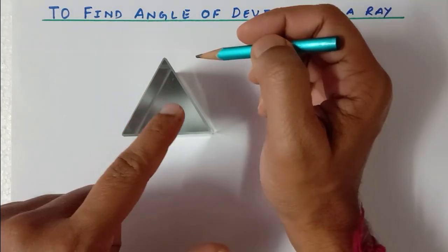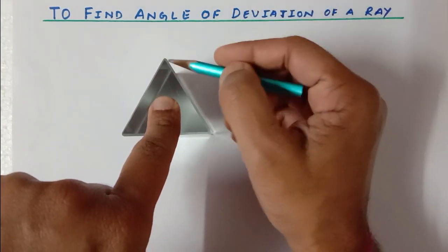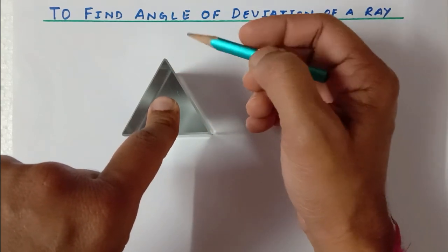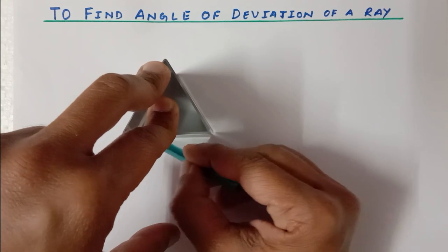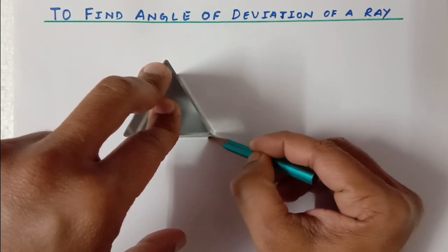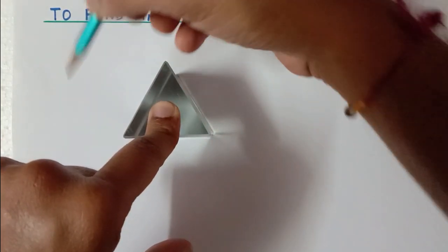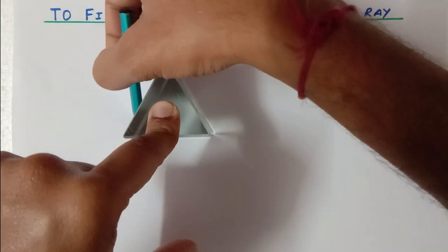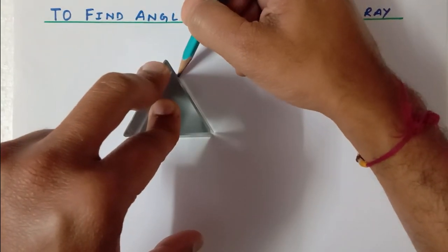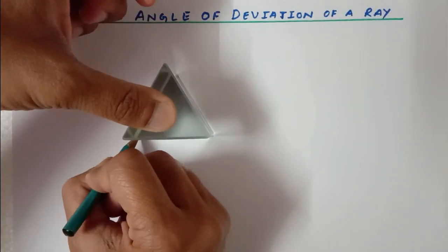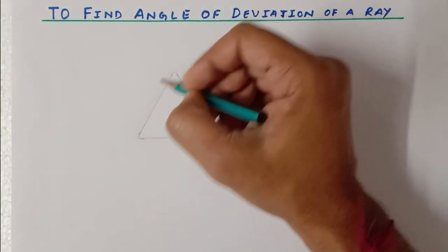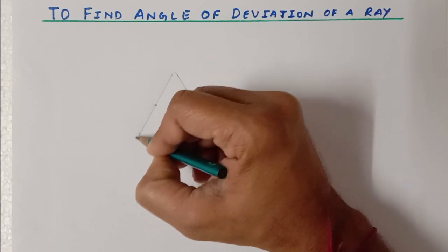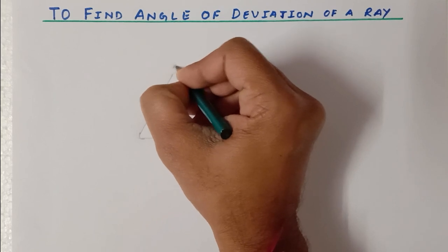I'm going to hold this prism tightly and draw the outline of the prism with a pencil. Make sure the prism doesn't move while you are making the outline. It's totally fine if you are unable to make the edges perfectly. Now I have made the outline of the prism, and I am going to select a point at the middle part of this line. Let me give the name of this prism as A, B, C.